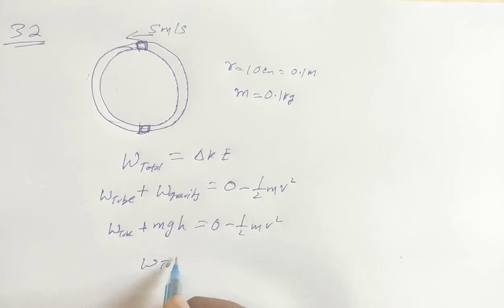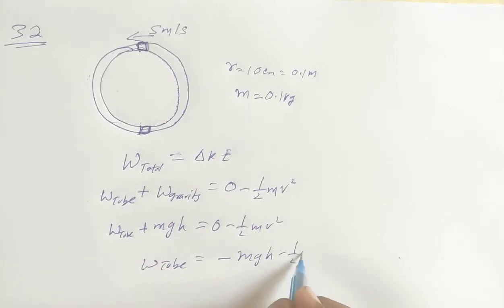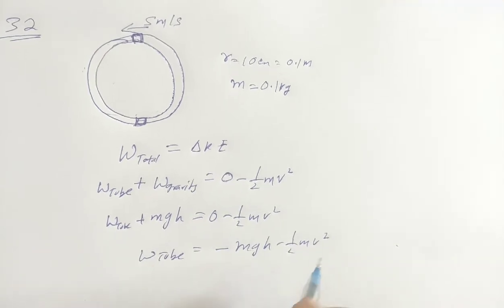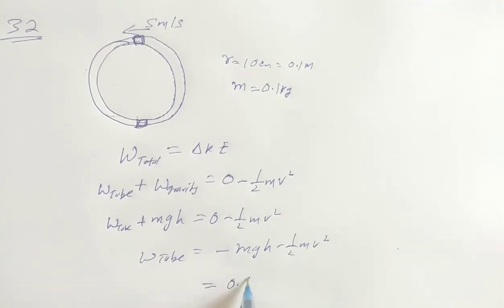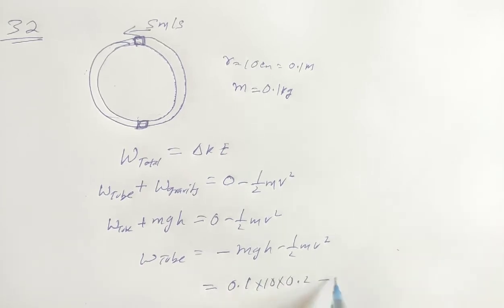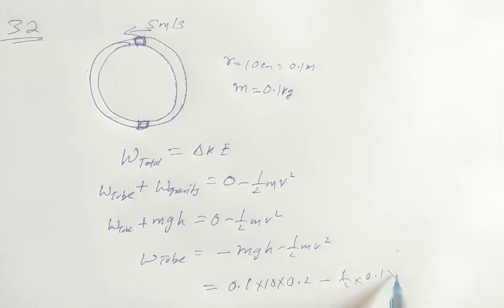Total work done by gravity plus work by tube equals change in kinetic energy. So work done by tube equals negative mgh minus half mv squared. Substituting values: 0.1 into 10 into 0.2 minus half into 0.1 into 25.